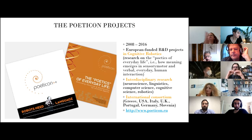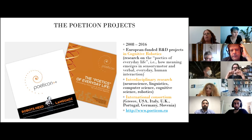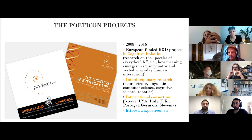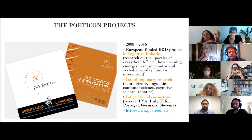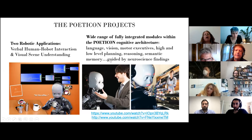The PRACTICAL projects were two European-funded projects that started in 2008 and finished in 2016. They focused on cognitive robotic applications, and the main topic involved how meaning emerges in sensory-motor experiences, verbal interaction, and everyday interaction. It was an interdisciplinary set of projects with colleagues from neuroscience, linguistics, computer science, robotics, and cognitive psychology.